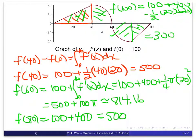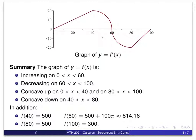Now we've got points to plot along with the qualitative information about increasing, decreasing, and concavity. Here's a summary of what we have done: we have information about where the function is increasing, where it's decreasing, where it's concave up, and where it's concave down. In addition, we know some function values — we were starting with f(0) = 100. If we now plot those points and combine that with this information, we can get a reasonably accurate picture of the graph of the function. Pause the screen and see if you can do that. The next screen will show the graph of the function.